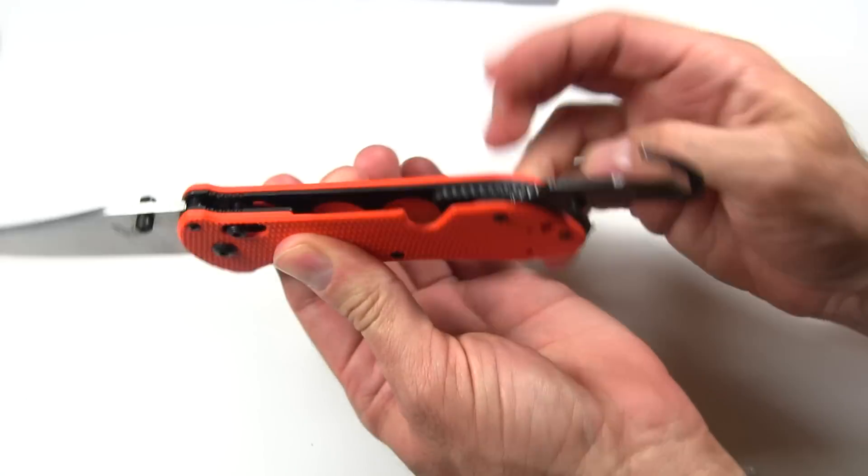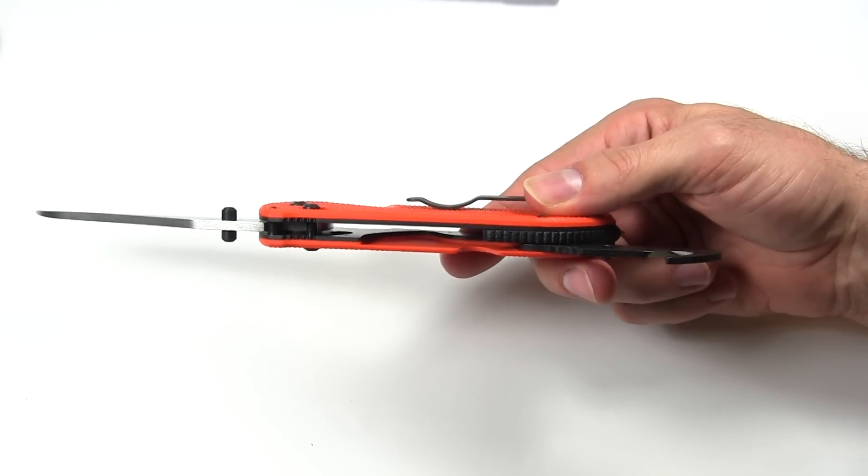It is a flow through design as you can see here. And actually if you pull this rescue hook out, you can even see in there, you can see kind of the back of that, the inside of that handle.